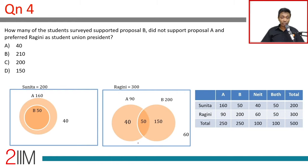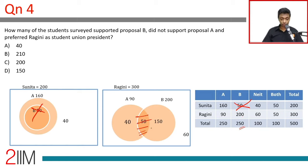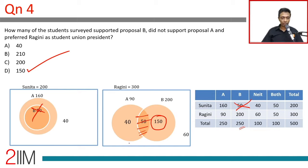Question 4: How many students surveyed supported proposal B, did not support proposal A, and preferred Ragini as student union president? Of the 250 in proposal B, those who supported B but not A: we ignore the 50 sitting inside A, leaving 200. Of that 200, 50 also supported proposal A, so 150 supported B but not A. The entire 150 preferred Ragini. The answer is 150.